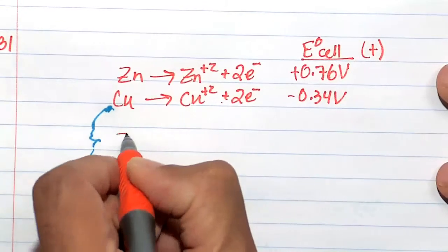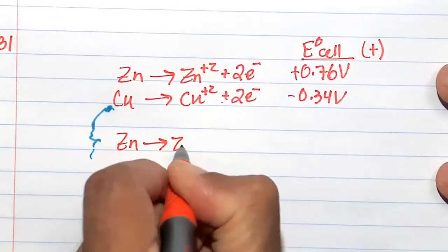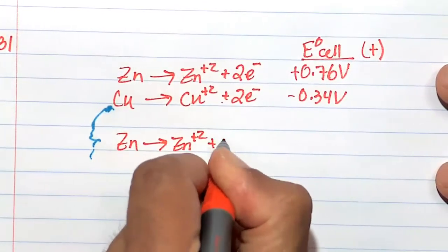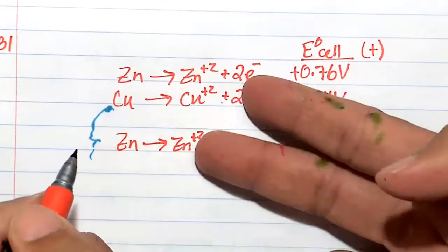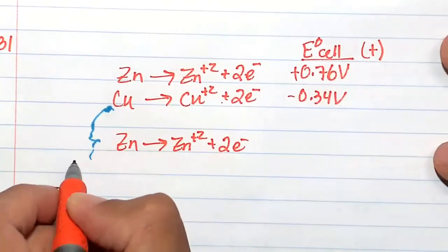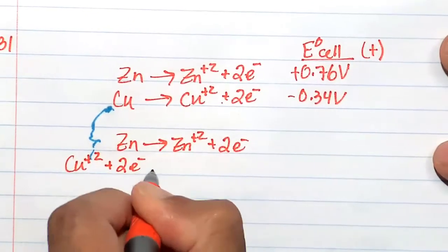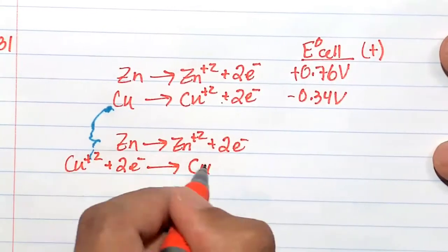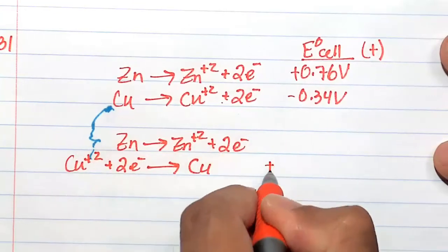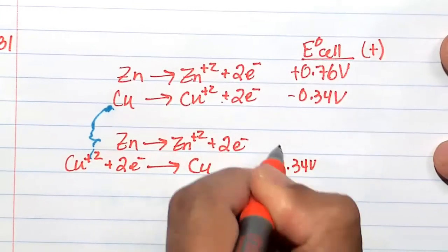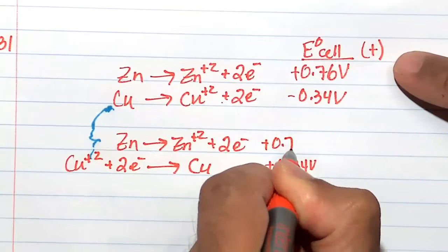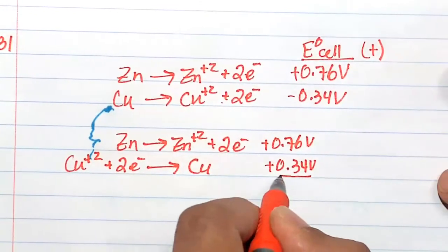Leaving the zinc reaction the same: zinc goes to zinc plus two plus two electrons. Let's flip the second half reaction so it's exactly the reverse: copper plus two plus two electrons goes to copper. This is zinc solid and copper solid. This is positive 0.34 volts. This was untouched, positive 0.76 volts.